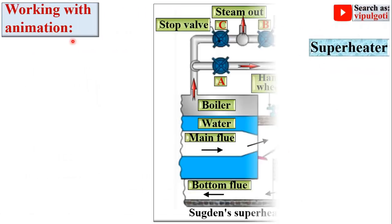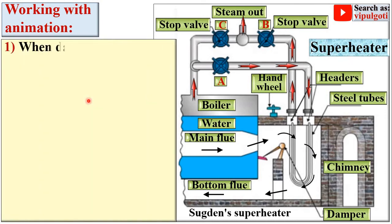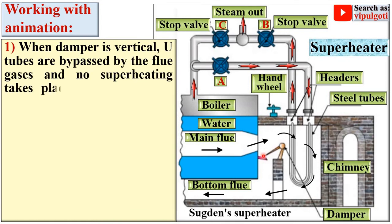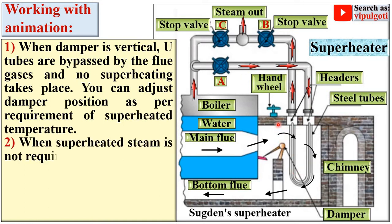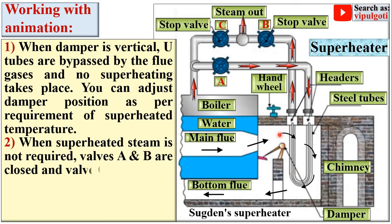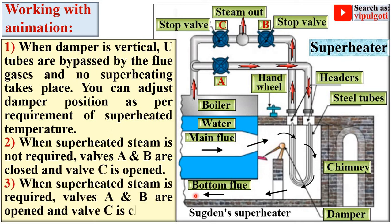Now, the working with animation of the superheater. When the damper is in the vertical position, the U-tubes are bypassed by the flue gases, and so the flue gases flow around the tubes and no superheating takes place. You can adjust the damper position as per the requirement of the superheated temperature of the steam.